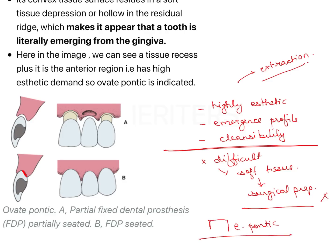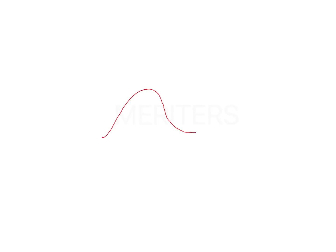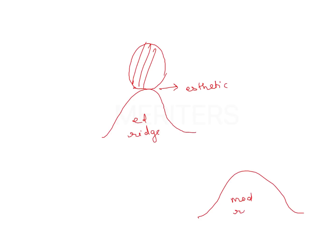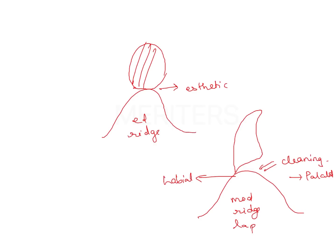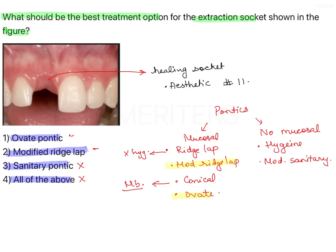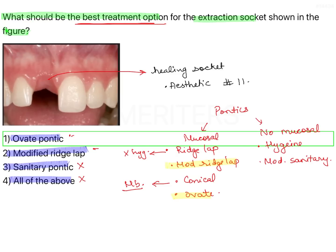We are left with Modified Ridge Lab and Ovid Pontic. Modified Ridge Lab is also indicated in aesthetic areas — it covers only the buccal portion of the ridge, leaving the palatal side open for cleaning, with mucosal contact only on the labial side. Ovid Pontic, on the other hand, covers the ridge surface completely and is more aesthetic. Since the question asks for the best treatment option, the answer by default is Ovid Pontic, which is option number 1.